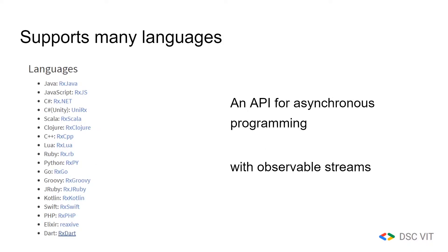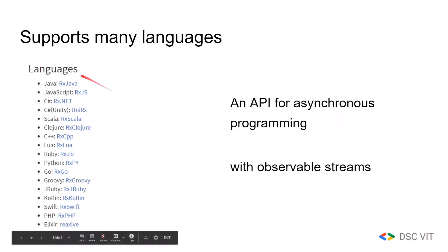So, what is RxDart? It is a library for async programming. It uses the concept of observables, and it supports a large number of languages.